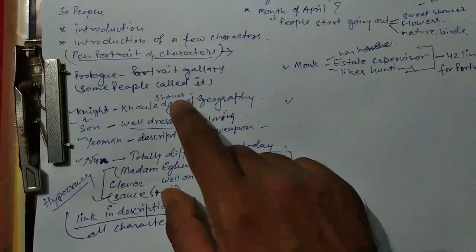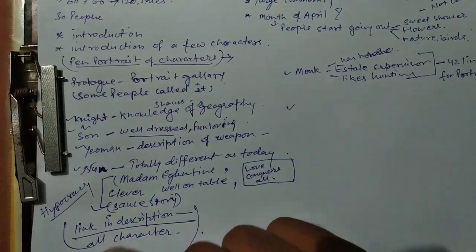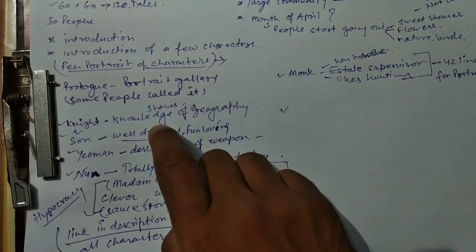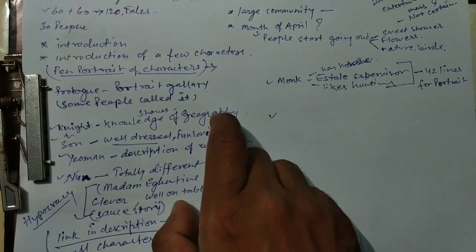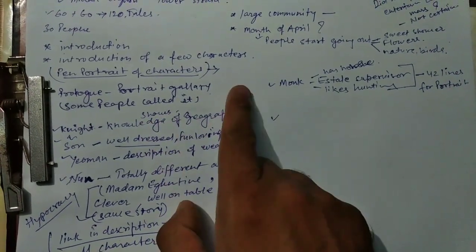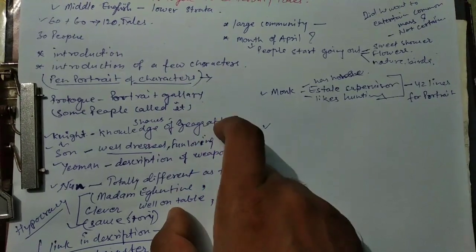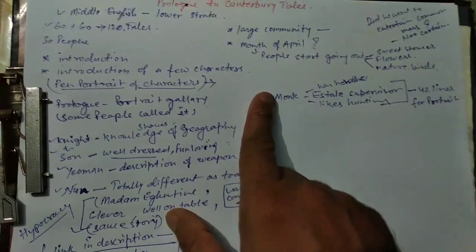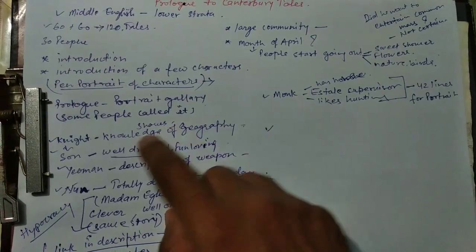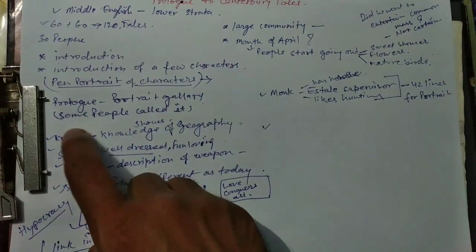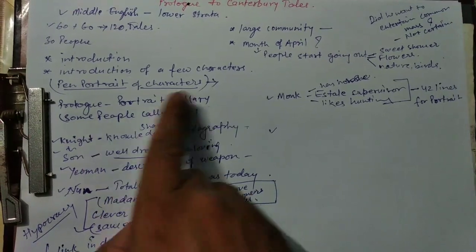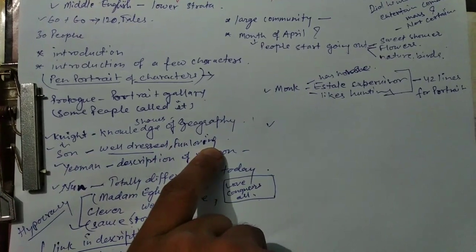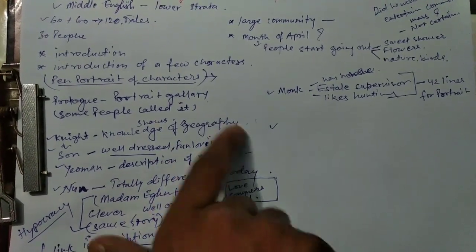Here are some important characters. The first was the Knight, and through the Knight, Chaucer showed his own knowledge of geography — Chaucer was a political man and man of business who went to several places. The Knight's son was well-dressed and a fun-loving person.